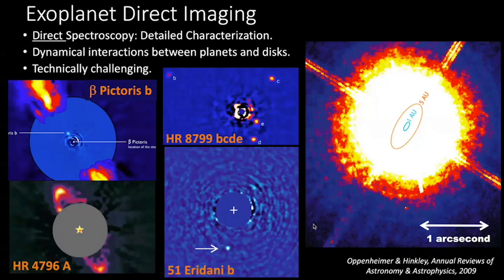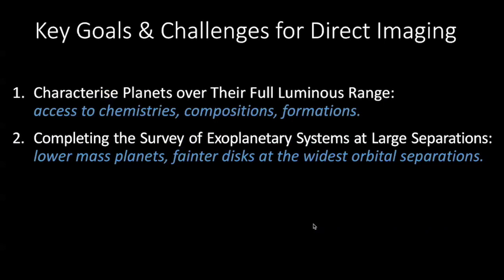As you can see from the rightmost panel in my slide, this is technically very challenging. Our task is to separate the very faint signal of a planet from the overwhelming glare of the host star. These are really our limiting systematics — the host starlight is typically 10,000, 100,000, or even a million times brighter than the planets we're trying to image. But when we're able to overcome that barrier, we can uncover images of extrasolar planets like the four images on the left — an incredibly fruitful population to study.